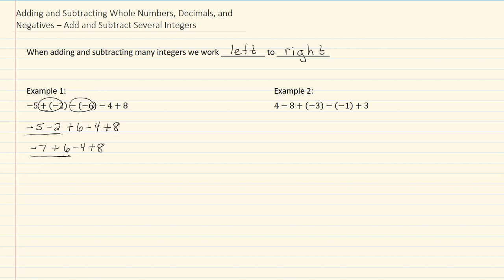Dealing with my next two numbers, I have negative seven plus six. They have different signs, so we subtract, keeping the sign of the larger number. So we get a negative one, and again, write down the rest of the numbers.